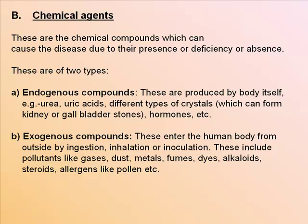Chemical agents are chemical compounds which can cause disease due to their presence, deficiency, or absence. They are of two types. Endogenous compounds are produced by the body itself — for example, urea, uric acids, crystals which can form kidney or gallbladder stones, and hormones. Exogenous compounds enter the human body from outside by ingestion, inhalation, or inoculation. These include pollutants like gases, dust, metals, fumes, dyes, alkaloids, steroids, and allergens like pollen.